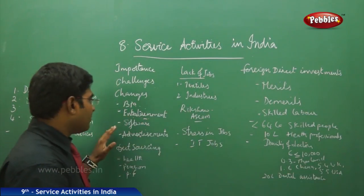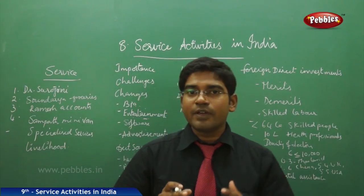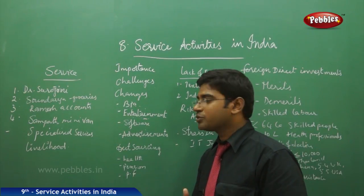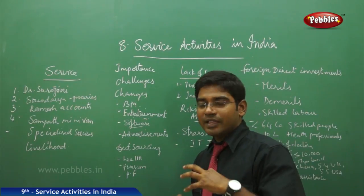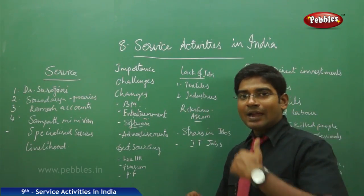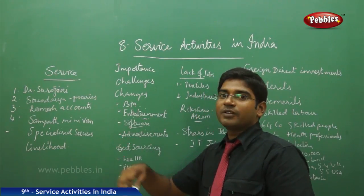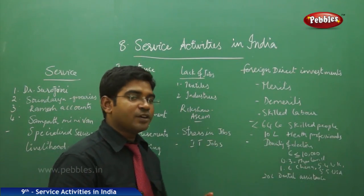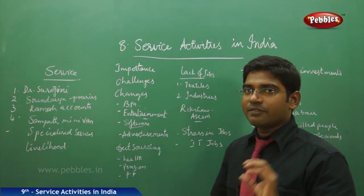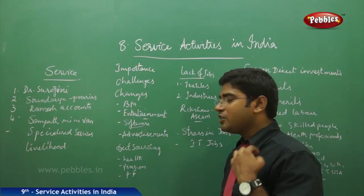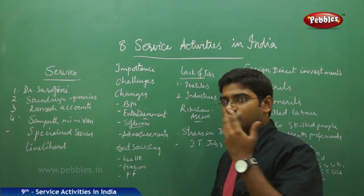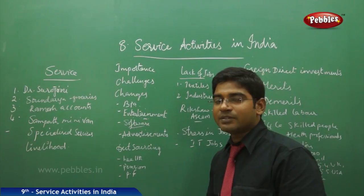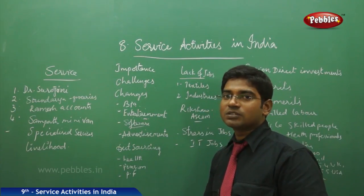Software companies provide solutions for computer problems and other technical issues, maintain databases, and employ a large number of people. For example, a group of four members started a company with 50 to 70 employees and achieved a turnover of 50 crores within seven years, working on UK-based projects. Software companies thus provide services related to computer solutions and other consumer requirements.